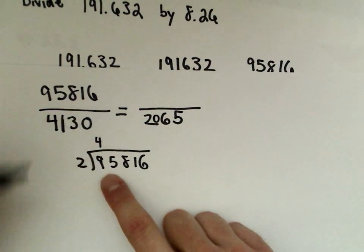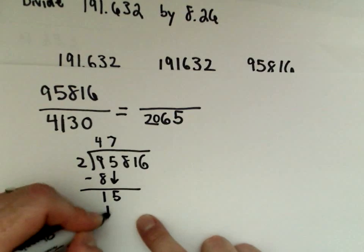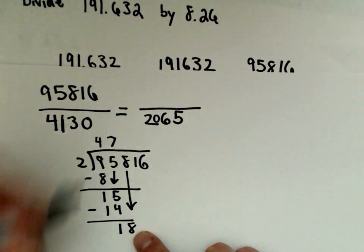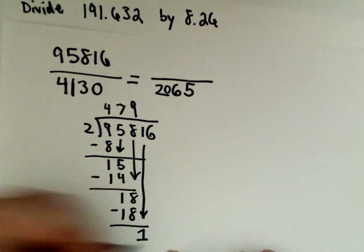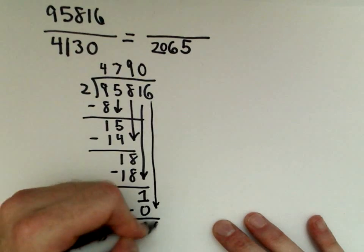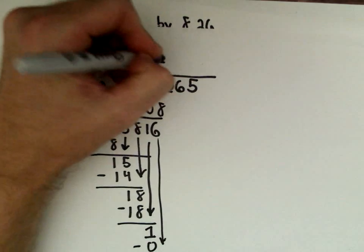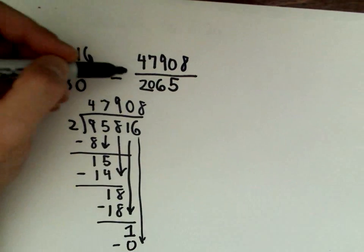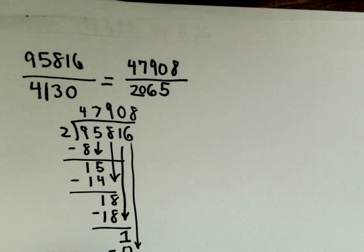So 2 will go into 9 four times. 4 times 2 is 8. Subtract. 2 will go into 15 seven times. 7 times 2 is 14. 15 minus 14 is 1. Drop down the 8. 2 will go into 18 nine times. 9 times 2 is 18, gives us 0. Drop down the 1. 2 will go into 1 zero times. 0 times 2 is 0. Drop down the 6. 2 will go into 16 eight times. So the numerator divided by 2 is going to be 47,908. We're having fun. So at this point, they're not both even. I'm just going to call it a day at this point and start doing long division and hopefully something good will happen.